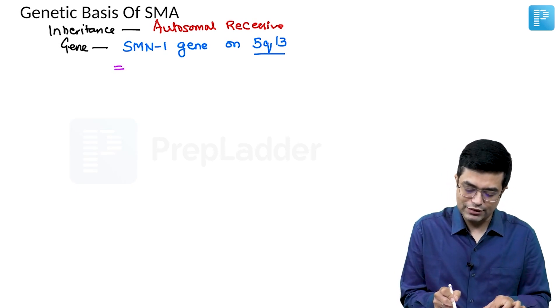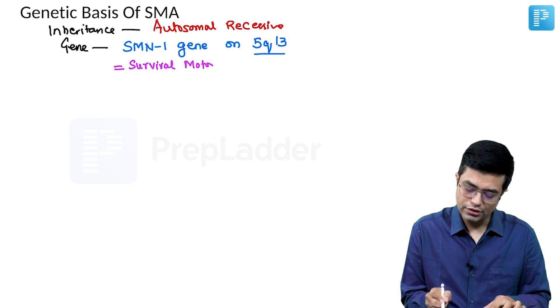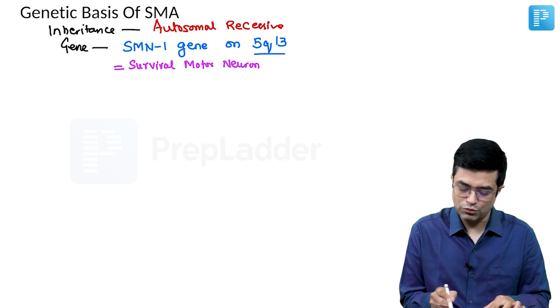SMN basically stands for survival motor neuron. SMN full form is survival motor neuron.